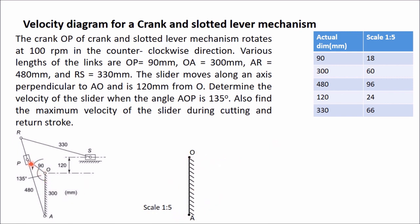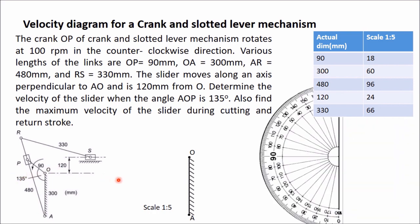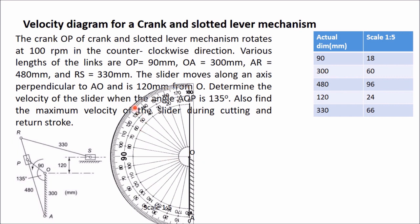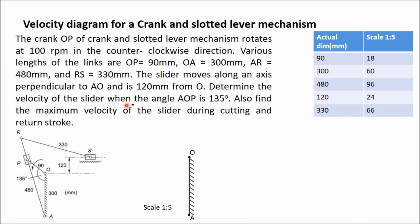Next, draw OP making an angle of 135 degrees from the vertical. The angle should not be reduced — we take the same 135 degrees. Use a protector at 135 degrees, mark the point, then from O join this point. Keep the scale and draw a line 90 mm long. At scale 1:5, 90 mm becomes 18 mm. Mark this point P.